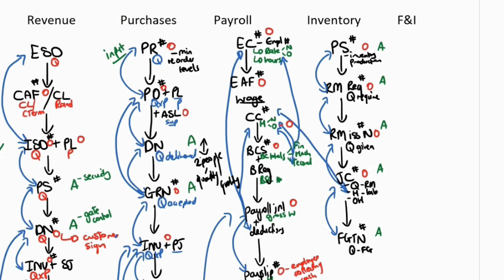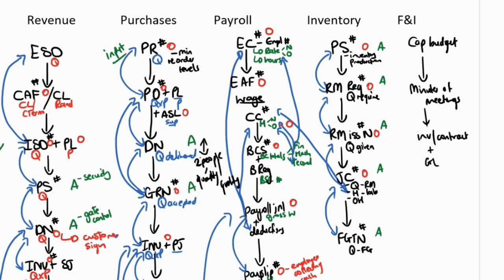Now for the finance and investment cycle — this cycle won't be large because companies don't purchase and require finance often. It starts with a capital budget detailing what they need to purchase and what financing is required. Then there will be minutes of the directors' meeting authorizing whatever it is they want to finance or invest in. Then there will be the invoice or contract for what was invested or financed, and then the general ledger recording whatever was purchased.